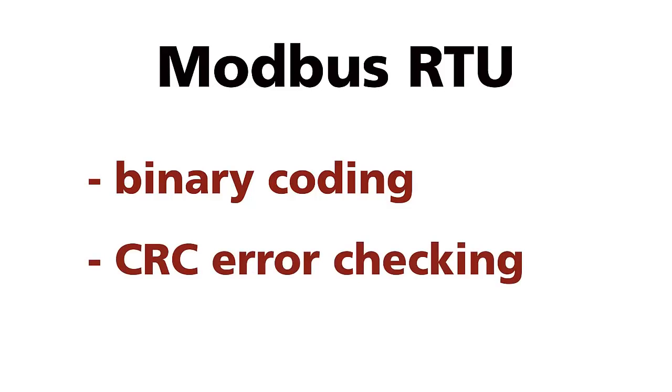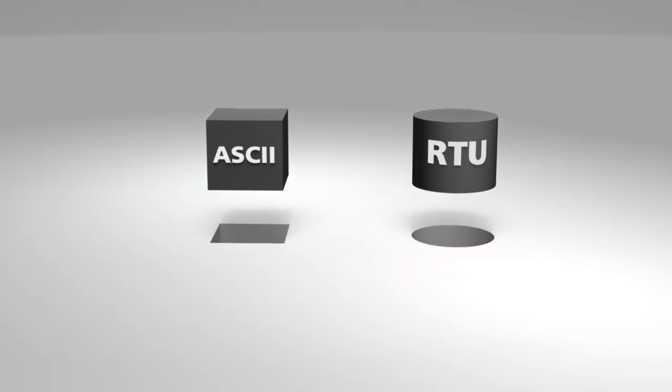Modbus RTU is by far the most common implementation using binary coding and CRC error checking. The two modes are incompatible, so a device configured for ASCII mode cannot communicate with one using RTU.